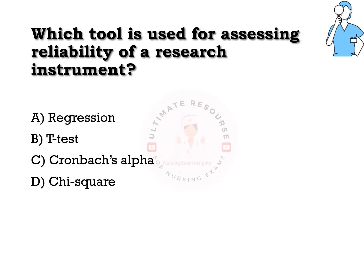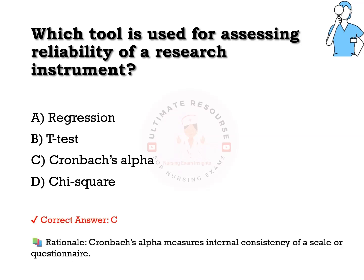Which tool is used for assessing reliability of a research instrument? Options are a) regression, b) t-test, c) Cronbach's alpha, d) chi-square. The answer is c) Cronbach's alpha. Cronbach's alpha measures internal consistency of a scale or questionnaire.